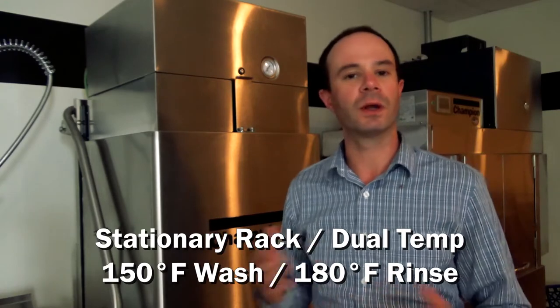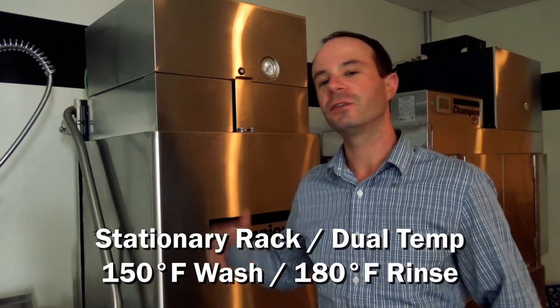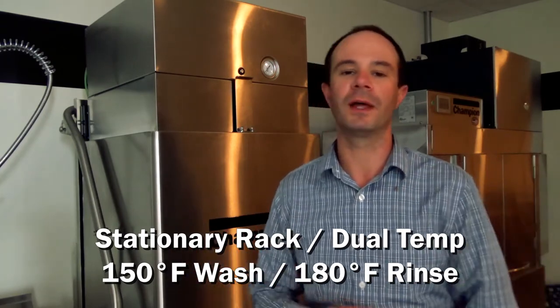In this category of stationary rack dual temp machines, we wash at 150 degrees minimum, and then we rinse at 180 degrees minimum. That allows us time to wash and get off all that dirt—anything on those plates, glasses, silverware, whatever it may be. Then we go into the final rinse where we clean all that stuff off and build up more heat, ultimately achieving that 160 degree final surface temperature.